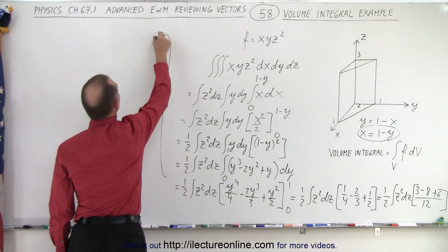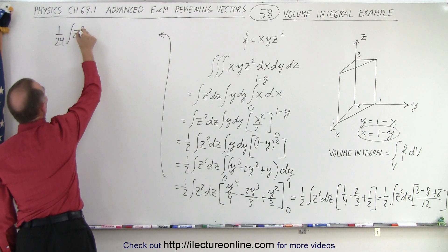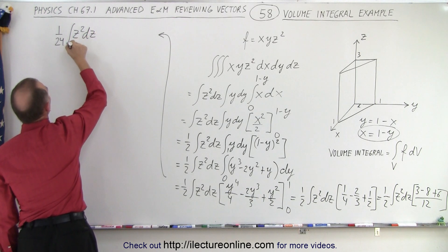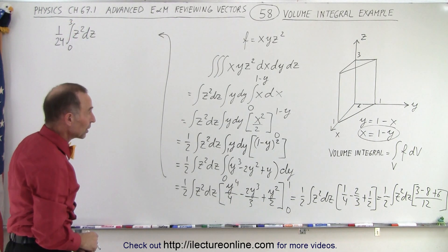So now let's come up here. So we have 1 over 24 times the integral of z squared dz, and those limits go from 0 to 3, because the height of the volume is 3 in the z direction.